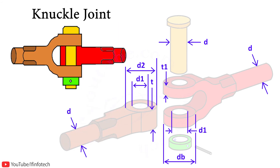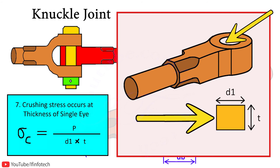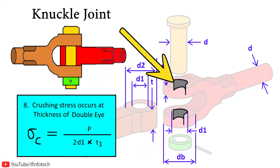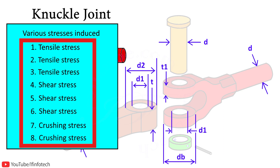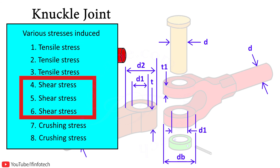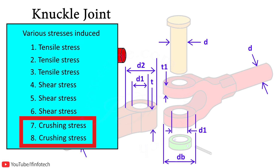Crushing stress occurs at the thickness of the single eye: load P divided by diameter d1 × thickness t. Crushing stress also occurs at the thickness of the double eye: P divided by 2 × d1 × t1. So there are a total of 8 types of stresses in the knuckle joint — 3 tensile stresses, 4 shear stresses, and 2 crushing stresses.